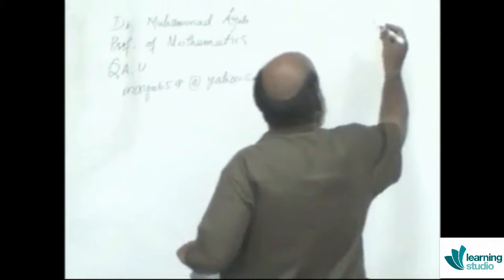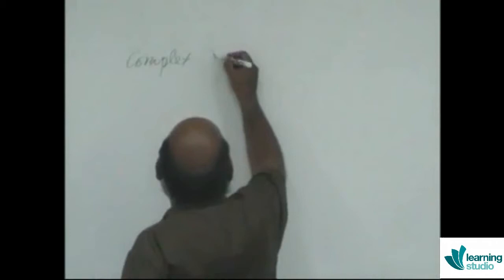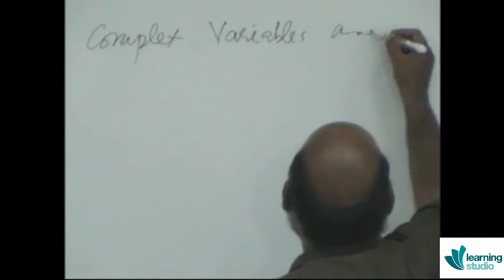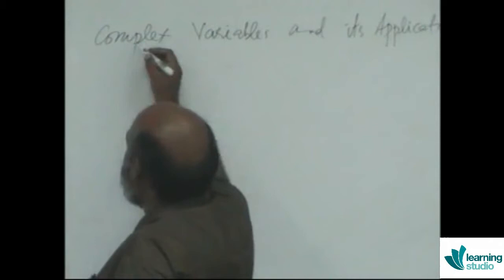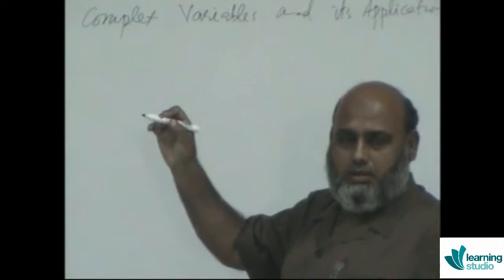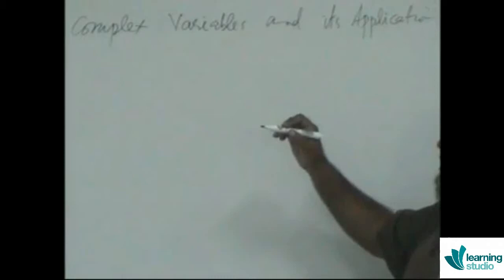The textbook I am going to use is Complex Variables and Its Application. This book is written by Churchill and Brown — an old book published in 1958. Churchill was the professor and Brown was a student. After the death of Churchill, Brown revised the version, and the new edition is listed as Brown and Churchill.